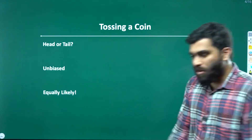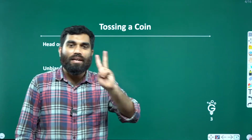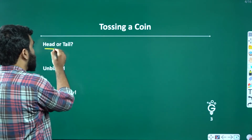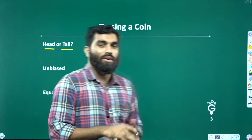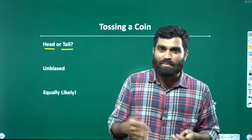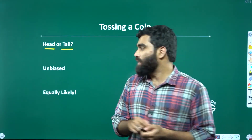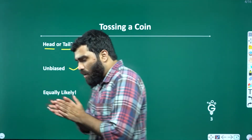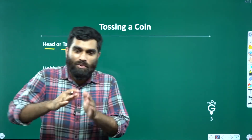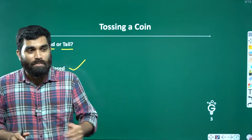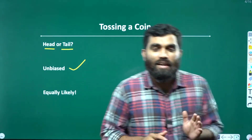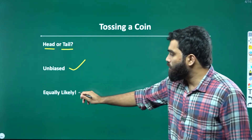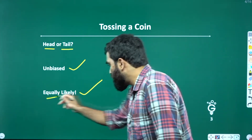Tossing a coin. We have a coin toss. We have to deal with two outcomes. We toss, we have a head, and we have a tail. Let's say the coin is unbiased. An unbiased coin means the outcomes are equally likely.